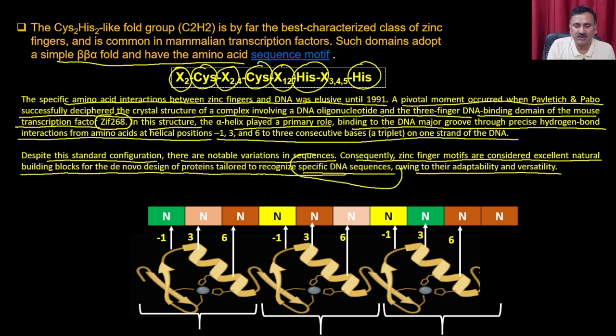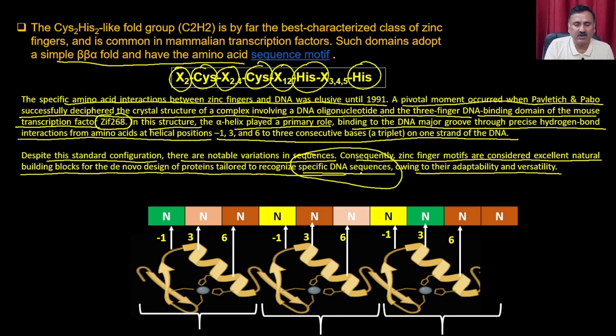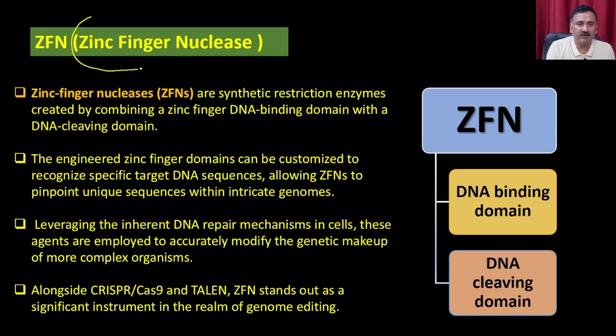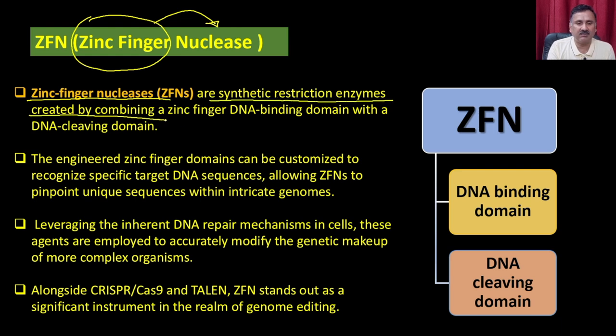Because of this zinc finger coordination between histidine and cysteine, it is very useful for detecting a specific DNA sequence. Previously no protein was available that could recognize a specific DNA sequence, so the ability to target a specific DNA sequence using zinc fingers was very important. Once zinc fingers were discovered, people began developing zinc finger nucleases — synthetic restriction enzymes created by combining a zinc finger DNA binding domain with a DNA cleavage domain.